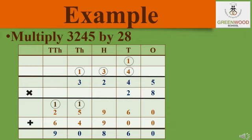Example: multiply 3,245 by 28. Step 1 — multiply by 1's digit (8). 8 fives are 40: 0 write down while 4 goes on the head of 10's place. 8 fours are 32, and 32 plus 4 is 36: 6 write down while 3 goes on the head of 100's. 8 twos are 16, and 16 plus 3 is 19: 9 write down while 1 goes on the head of 1000's place. 8 threes are 24, and 24 plus 1 is 25 — step 1 complete, giving 25,960. Step 2 — multiply the whole number by the 10's digit (2), going to the next line with one 0 in 1's place.